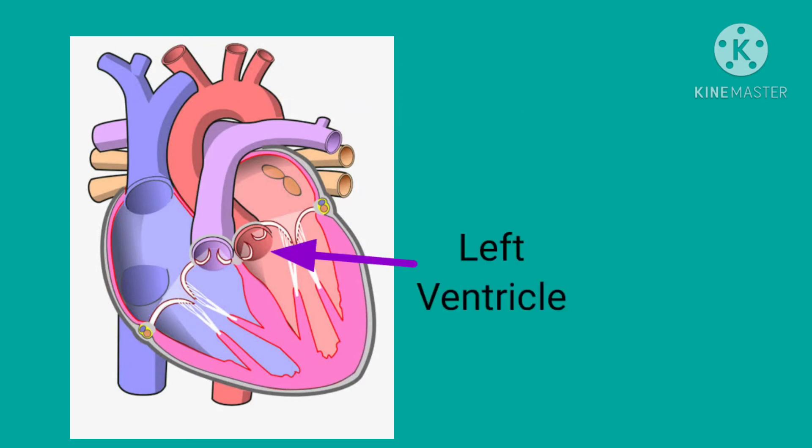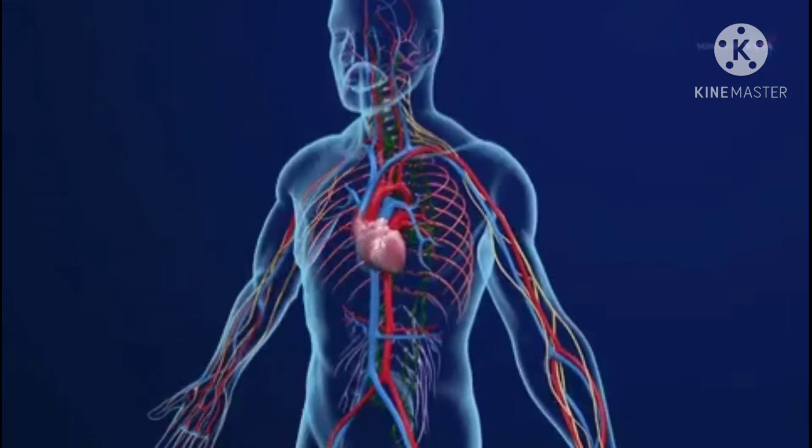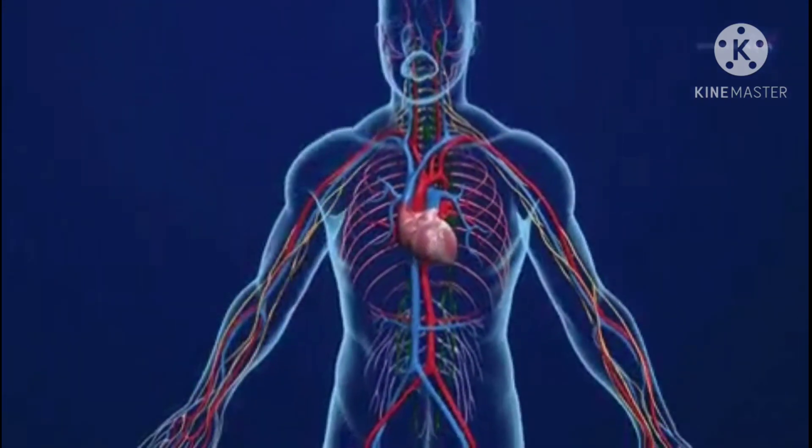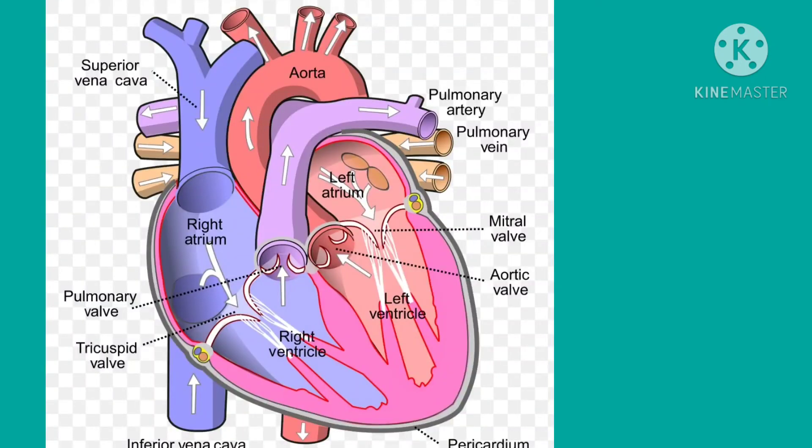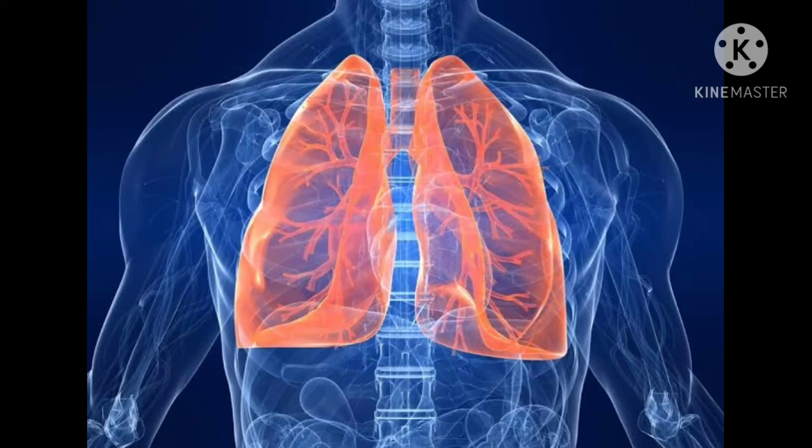Third is the pulmonary artery. You know that arteries carry oxygenated blood, but the pulmonary artery carries blood rich in carbon dioxide from the right ventricle of the heart to the lungs.